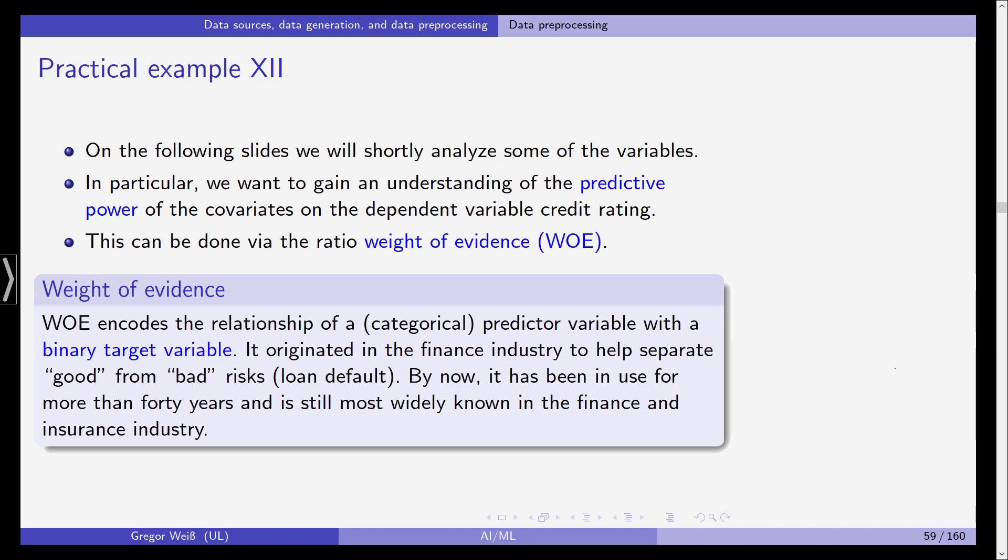We want to forecast something and as you might have guessed if the data sample is called German credit data it's probably that we are trying to forecast and predict default rates in a loan portfolio. For this we are going to use the weight of evidence to get an understanding of the predictive power of some of our covariates, of some of our features.